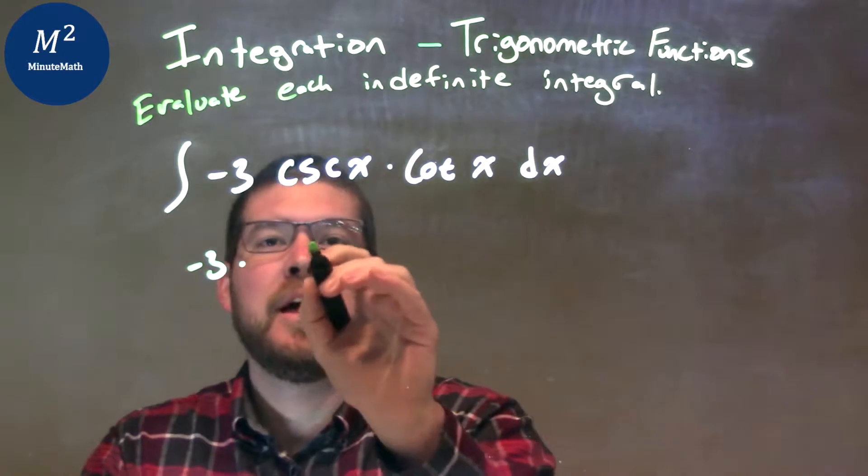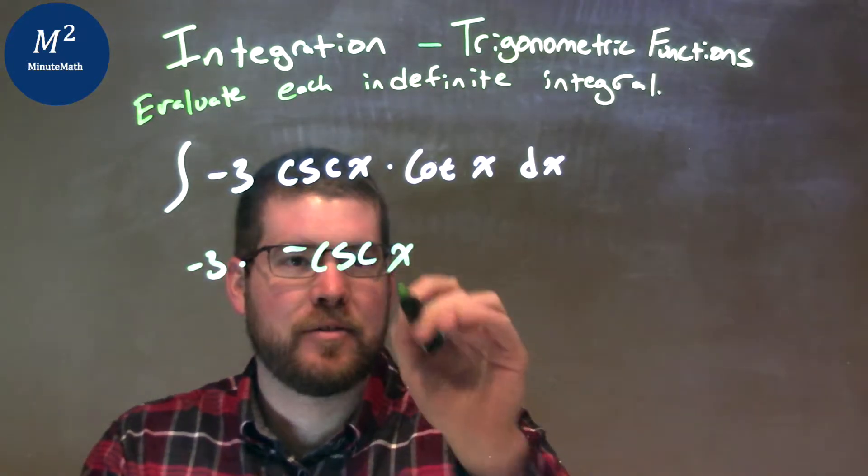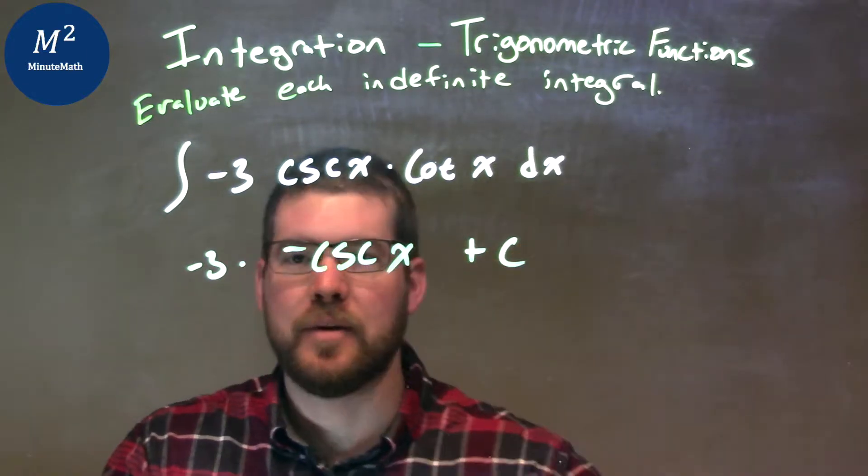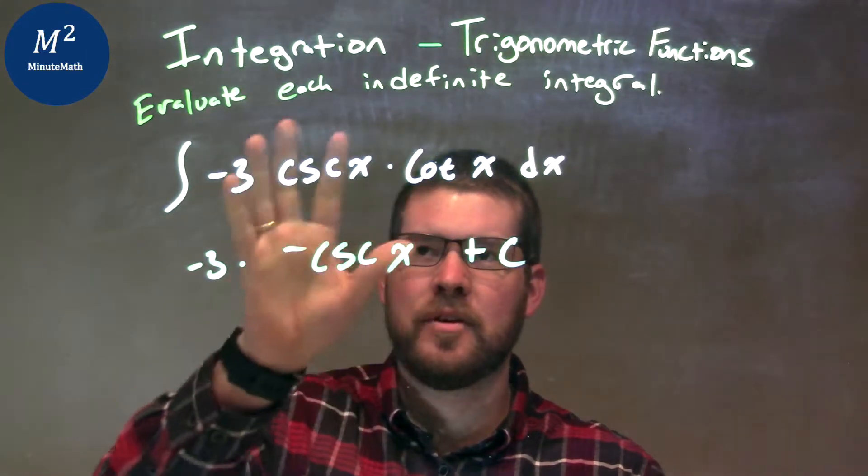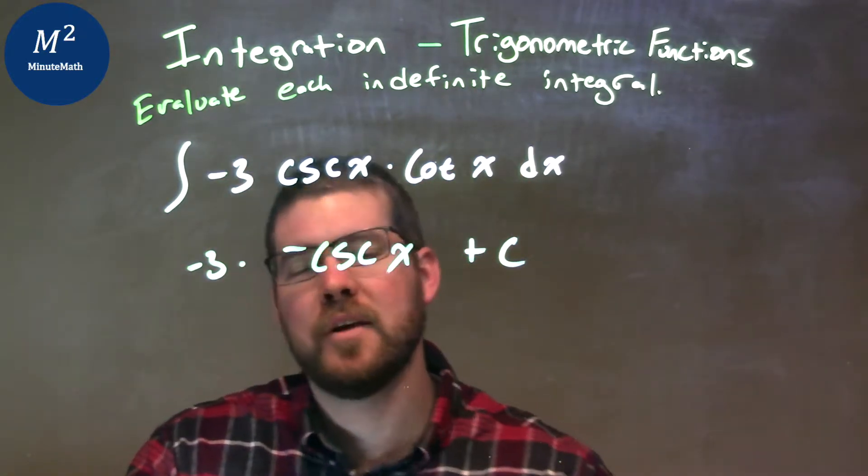the integral of cosecant x cotangent of x becomes a negative cosecant x, and then don't forget a plus C. So cosecant x cotangent x, the integral of that combination being multiplied is a negative cosecant of x.